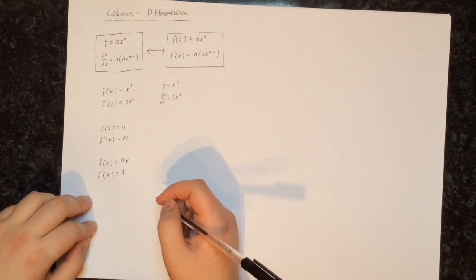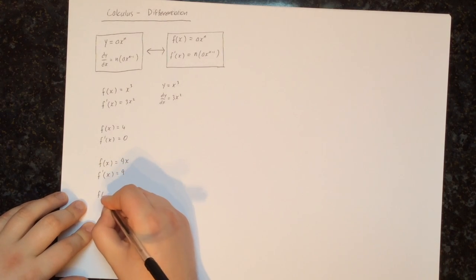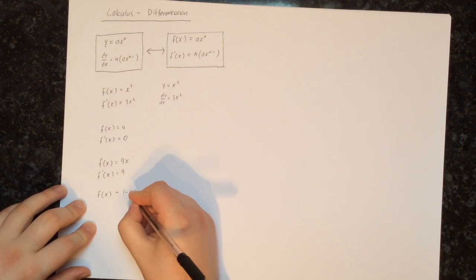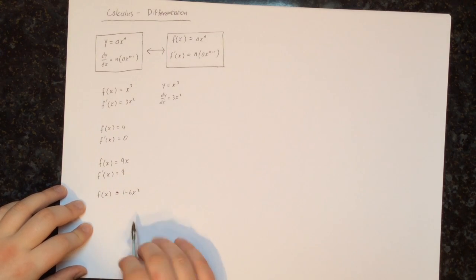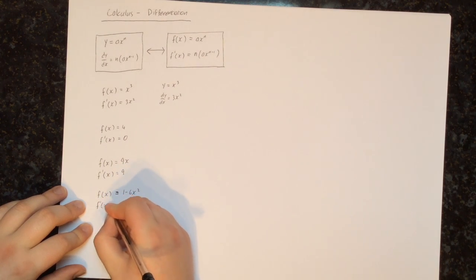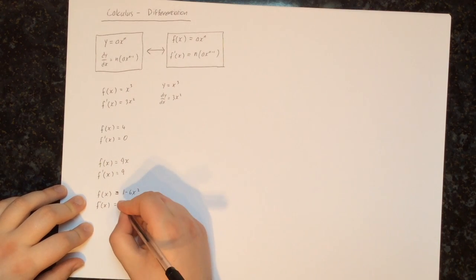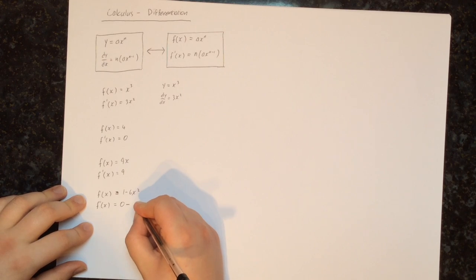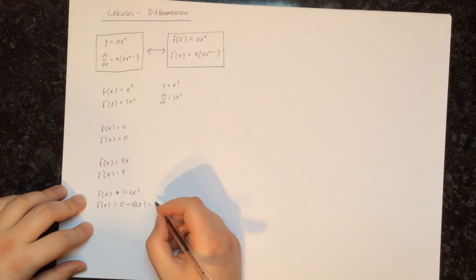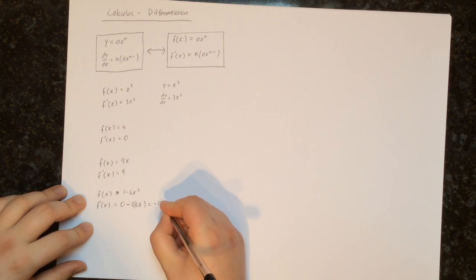Everything from the previous videos still applies. Next, let's try differentiating f of x equals 1 minus 6x squared. Whenever we differentiate two things added together, we differentiate them separately and add the results. The derivative of 1 is 0 since it's a constant. Then for 6x squared, we multiply by the power — that's 2 — and reduce the power by 1. So we get minus 2 times 6x, which simplifies to minus 12x.